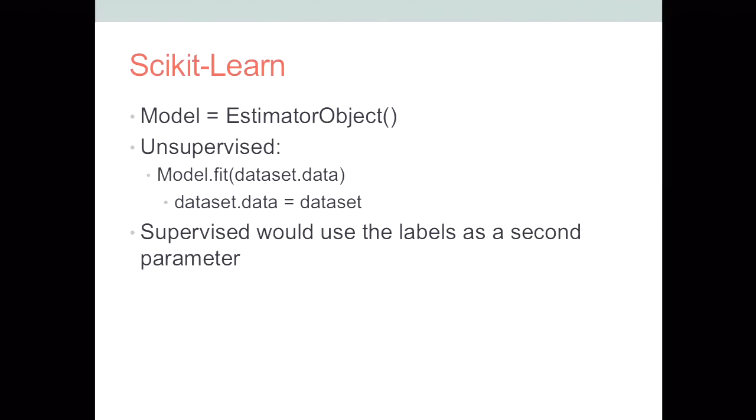So this is just the basic fitting a model process in some pseudocode here. We set a model equal to an estimator object. It's going to be our k-means algorithm. And then in unsupervised learning, you fit that model to your data. In supervised learning, you would use the labels as another parameter for classification, but not in k-means clustering.